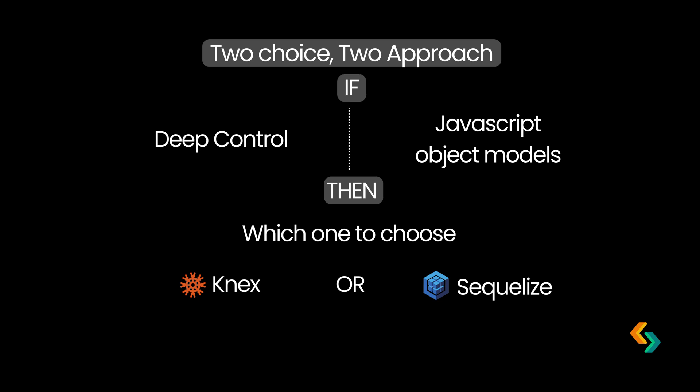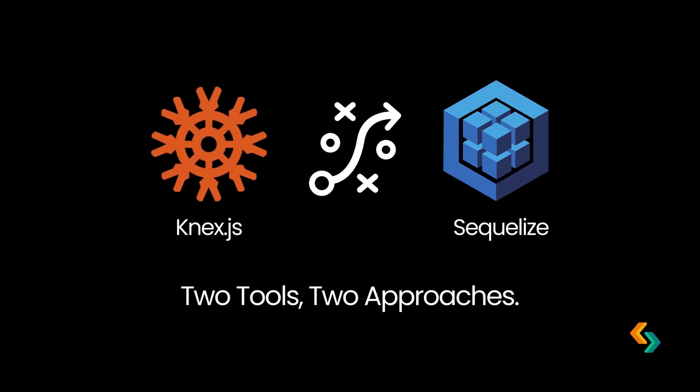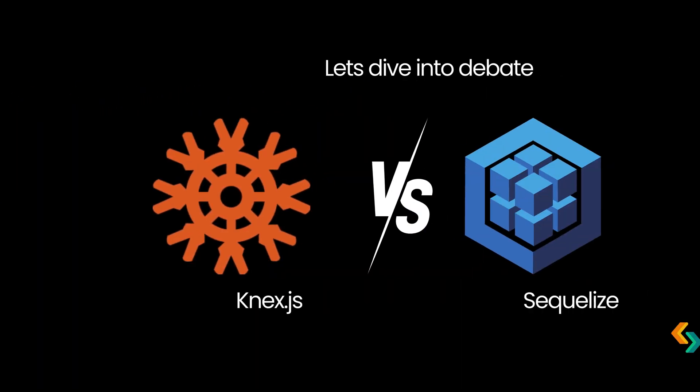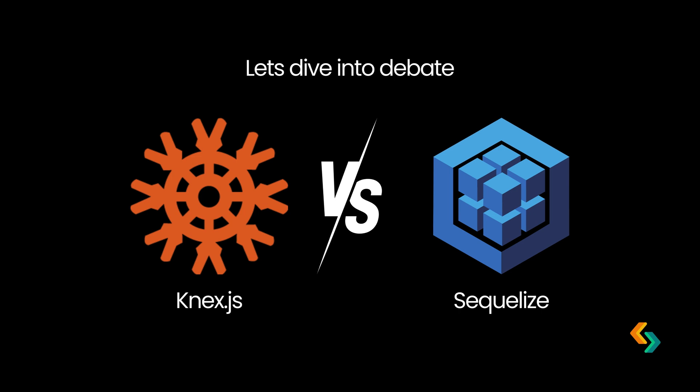Picture this. Your next project needs solid database management. You're probably asking yourself, do I want deep control over every SQL command, or would I rather focus on my JavaScript models and let the database work in the background? Knex.js and Sequelize each give you powerful ways to handle databases in JavaScript, but the way they approach it is vastly different. Let's dive deeper to see which tool aligns with your style and project needs.